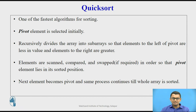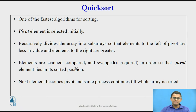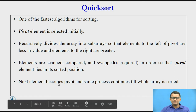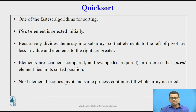This partitioning is done based on the pivot element, and once the partition is over the pivot element is situated at its sorted position. The elements are scanned, compared, and swapped if required so that the pivot element lies in its sorted position. The next element at the first position then becomes the pivot, and the same process continues until the whole array is sorted.